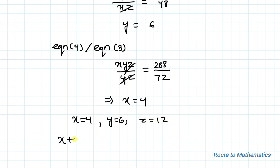So x + y + z = 4 + 6 + 12 = 20 is our answer. I hope you have understood both methods. Thanks for watching — please subscribe to my channel and click the bell icon for more such interesting videos. Thank you.